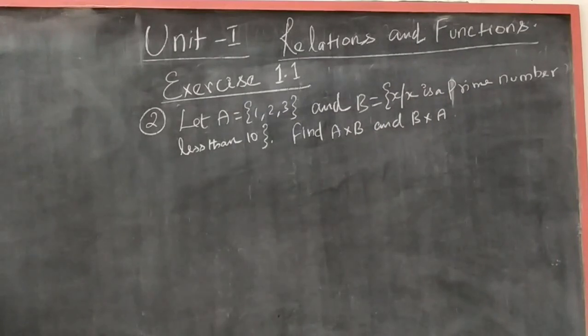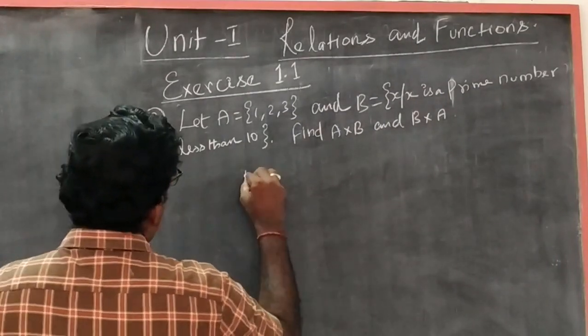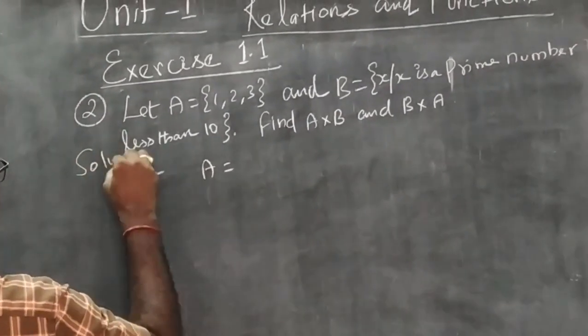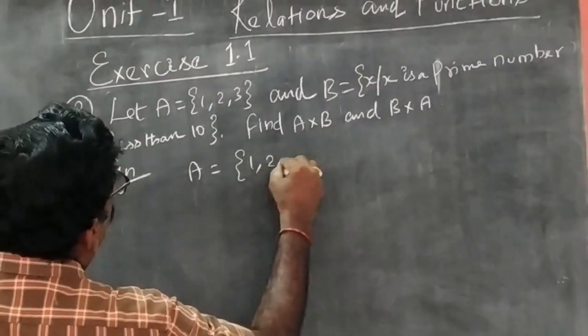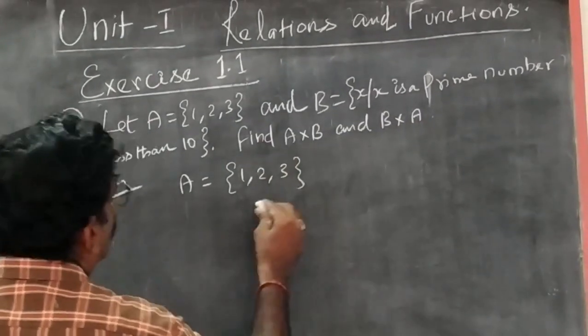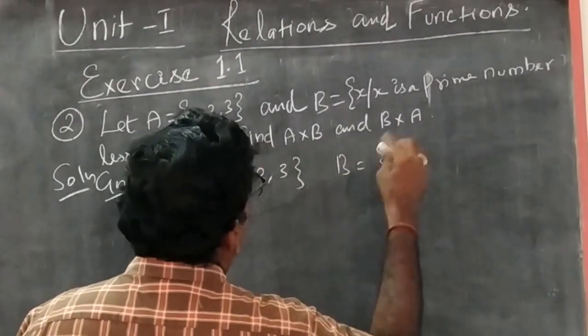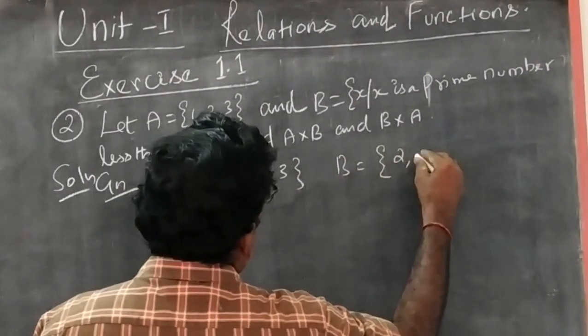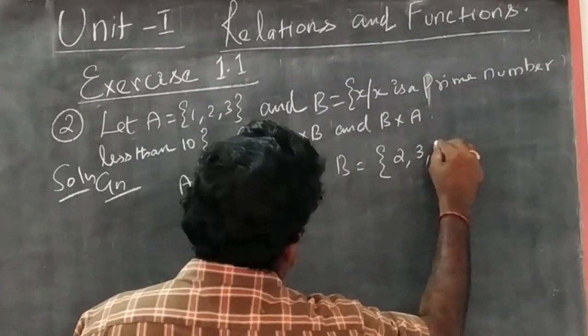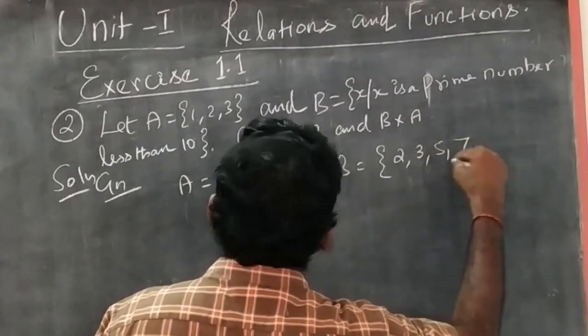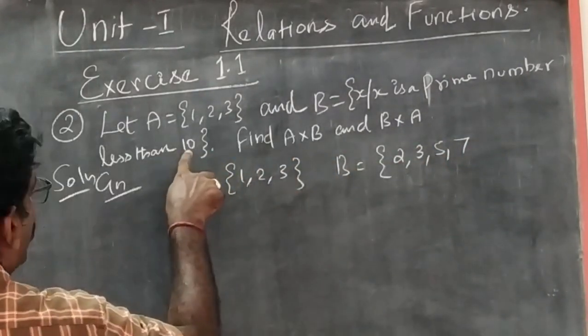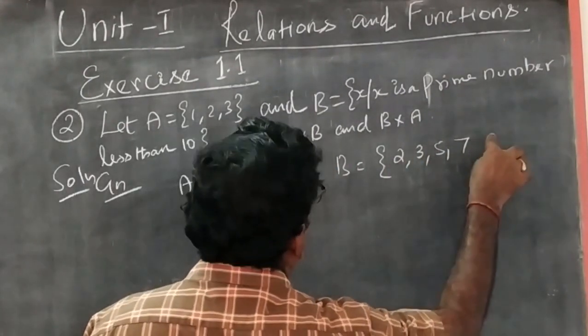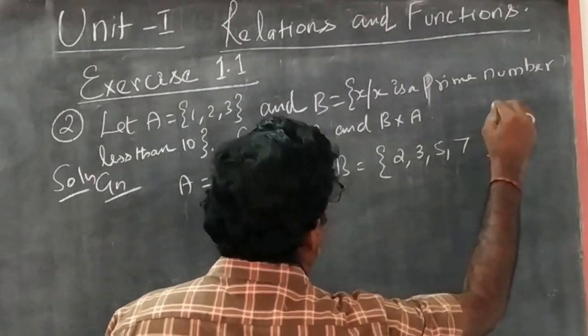A is given as {1, 2, 3}. B is equal to the prime numbers. Prime numbers: 2, 3, 5, 7 less than 10. 8, 9, 10 are not prime, so B = {2, 3, 5, 7}.